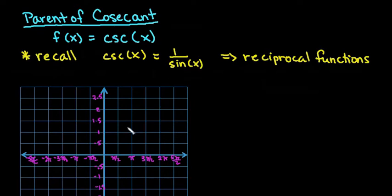For this video, what I want to do is talk to you about the parent function of cosecant, how to graph it, and some of the attributes about the graph. So first of all, the parent function for cosecant is the function f(x) = csc(x). You could also have it written as y = csc(x). Both are acceptable.